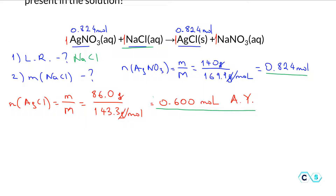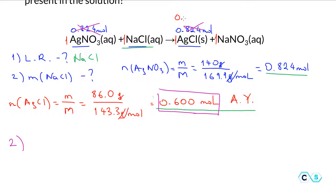Question number two: how many grams of sodium chloride did we actually have in this solution? In order to do that, we need to find the moles of sodium chloride based on the chemical equation. We cannot base our calculation on silver nitrate since it was not the limiting reactant. So we take the 0.600 moles of silver chloride actually formed, and based on the one-to-one mole ratio, we find that there were 0.600 moles of sodium chloride that reacted.